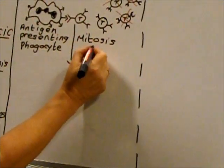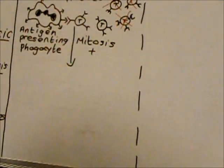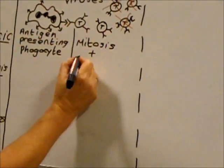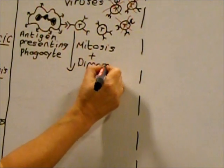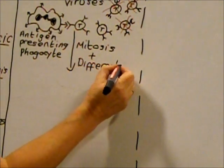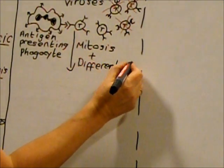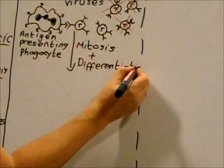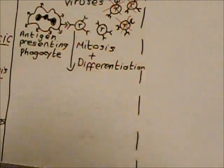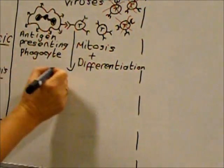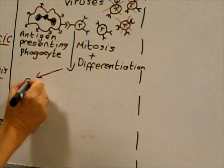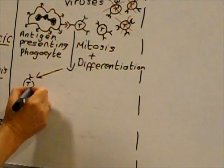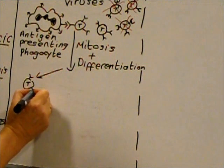When the T cell is activated, it undergoes mitosis — rapidly dividing to produce a whole clone of identical T cells — but these also undergo the process of differentiation, so a number of different types of specialised T lymphocytes are produced.